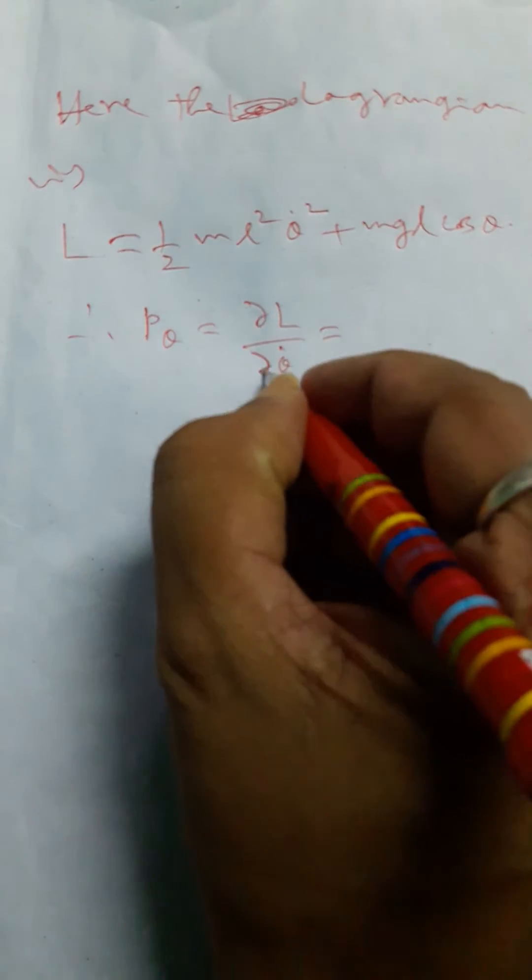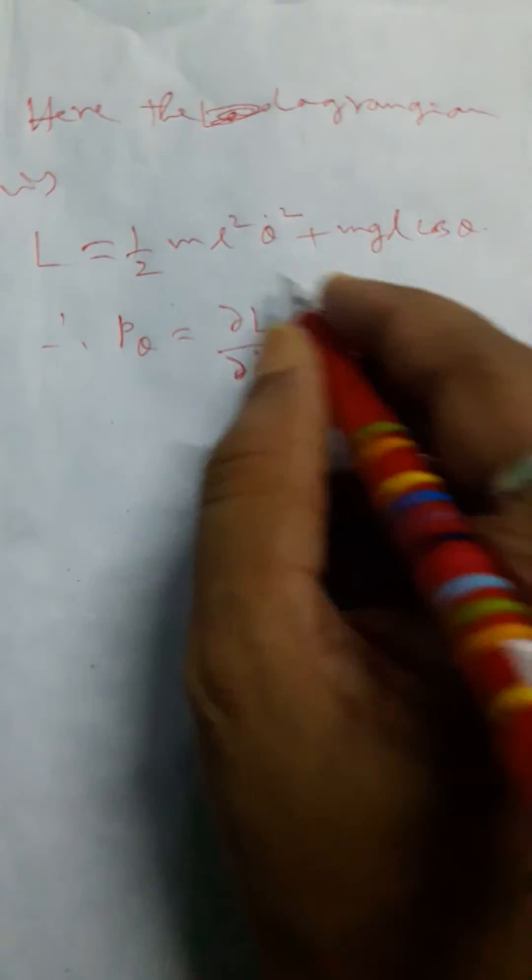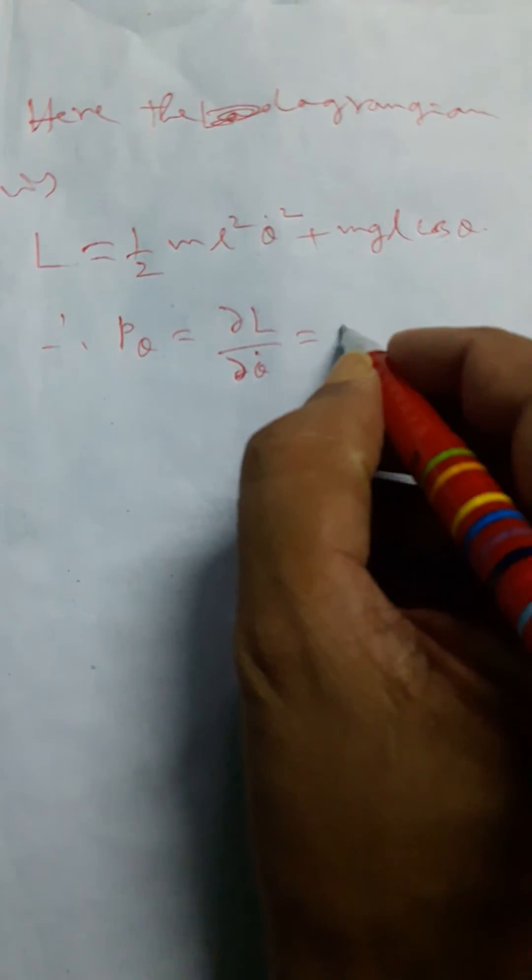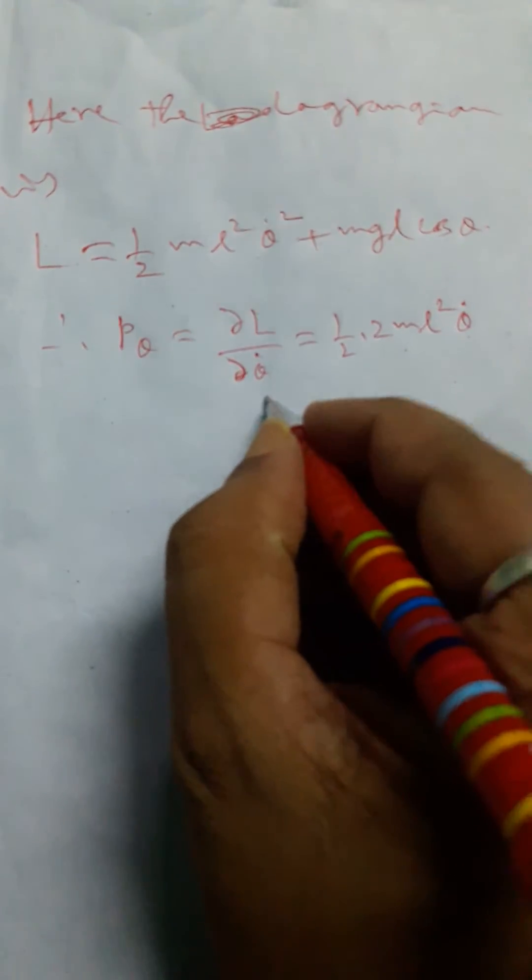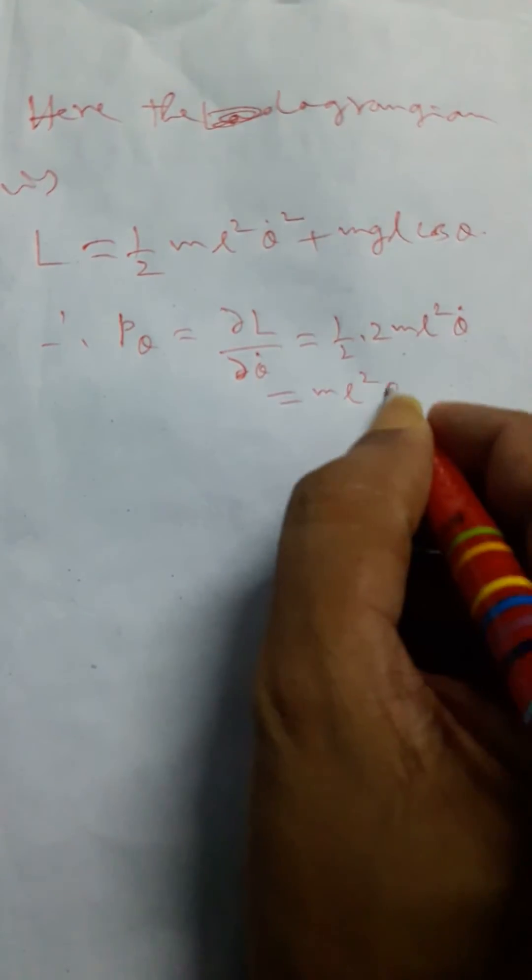We differentiate partially this Lagrangian function and finally we get 1/2 × 2ML²θ̇. So that will be ML²θ̇. This term will be zero.